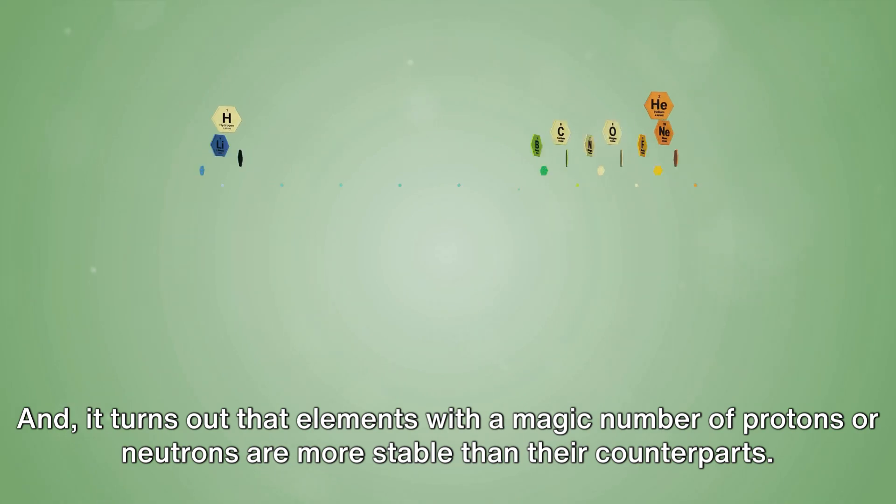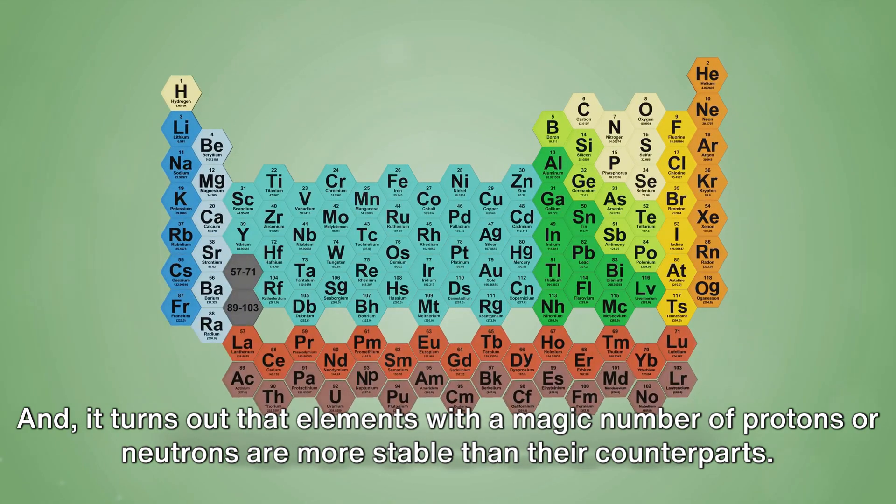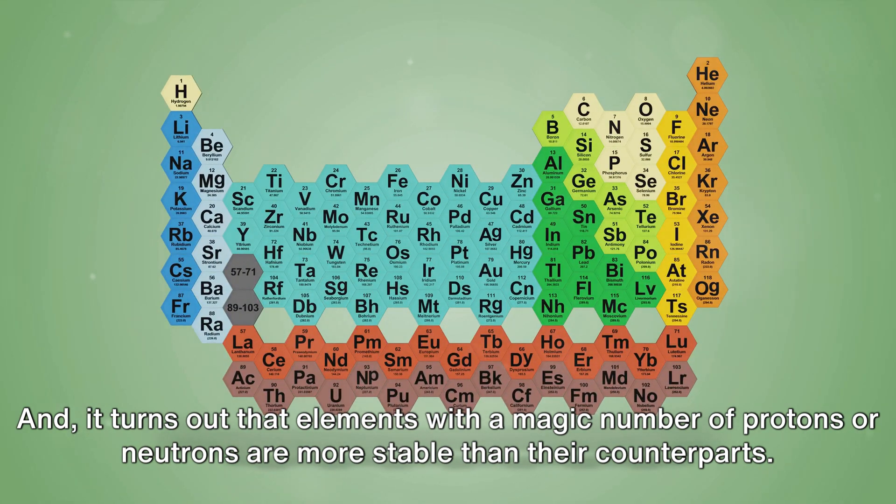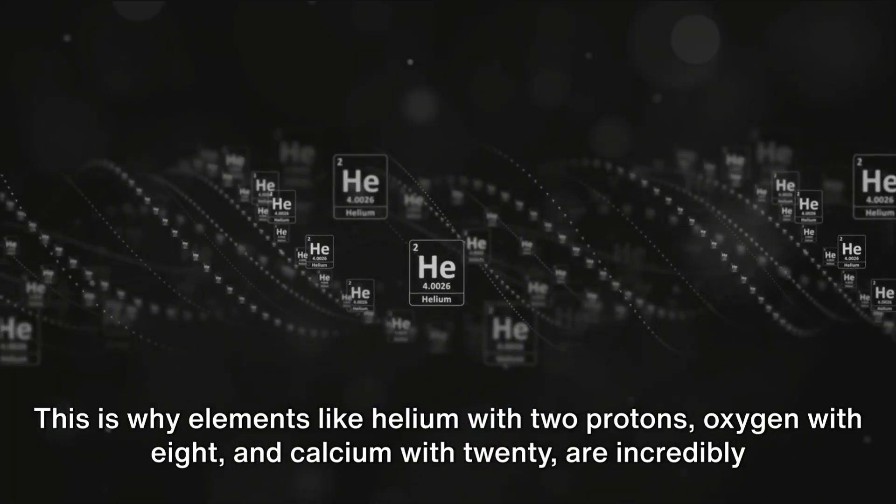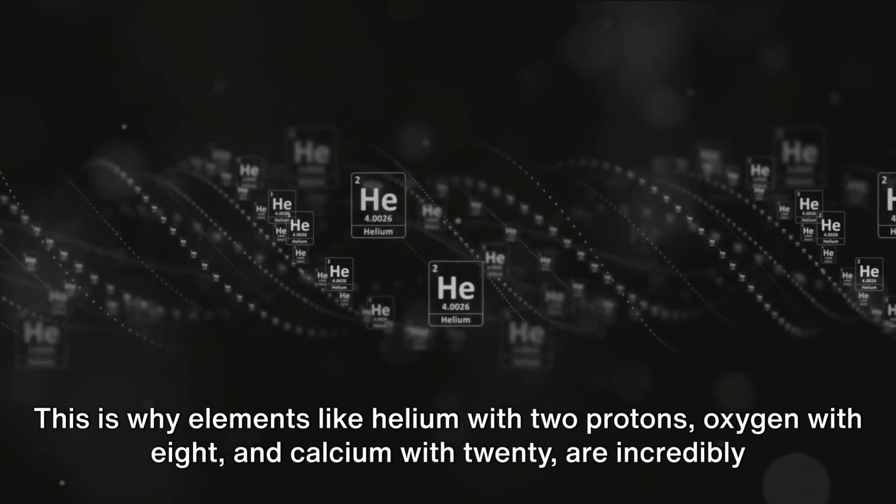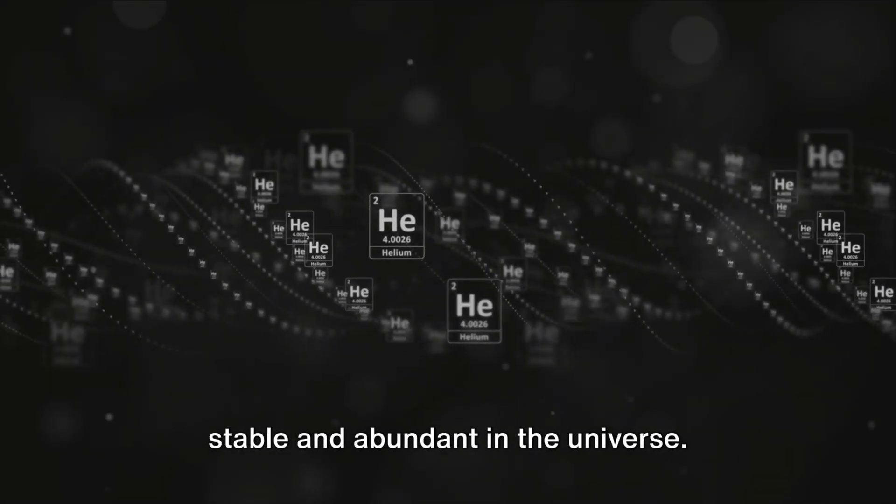And it turns out that elements with a magic number of protons or neutrons are more stable than their counterparts. This is why elements like helium with 2 protons, oxygen with 8, and calcium with 20 are incredibly stable and abundant in the universe.